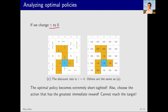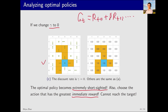Reducing gamma further to 0 demonstrates another change in the optimal policy. In this case, the policy is extremely short-sighted. The agent focuses solely on the immediate reward. If gt is the return, it is calculated as r(t+1) plus gamma times r(t+2) and so on. If gamma equals 0, it implies that all subsequent values are 0. This means that no matter what return I can receive in the future, once it is discounted, everything becomes 0. Thus, the return is exactly the immediate reward, and the optimal policy would simply choose the action that maximizes the immediate reward.